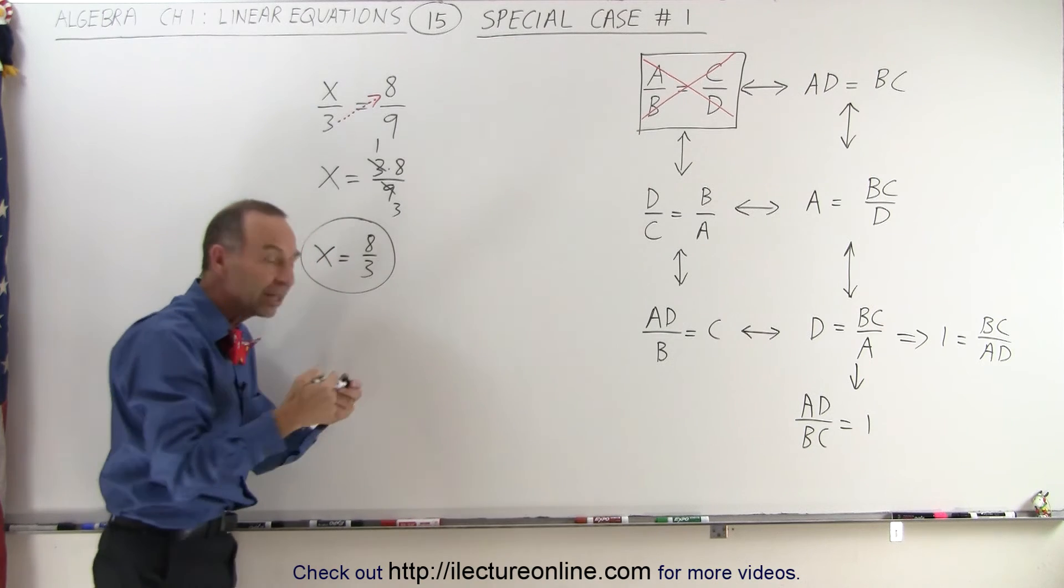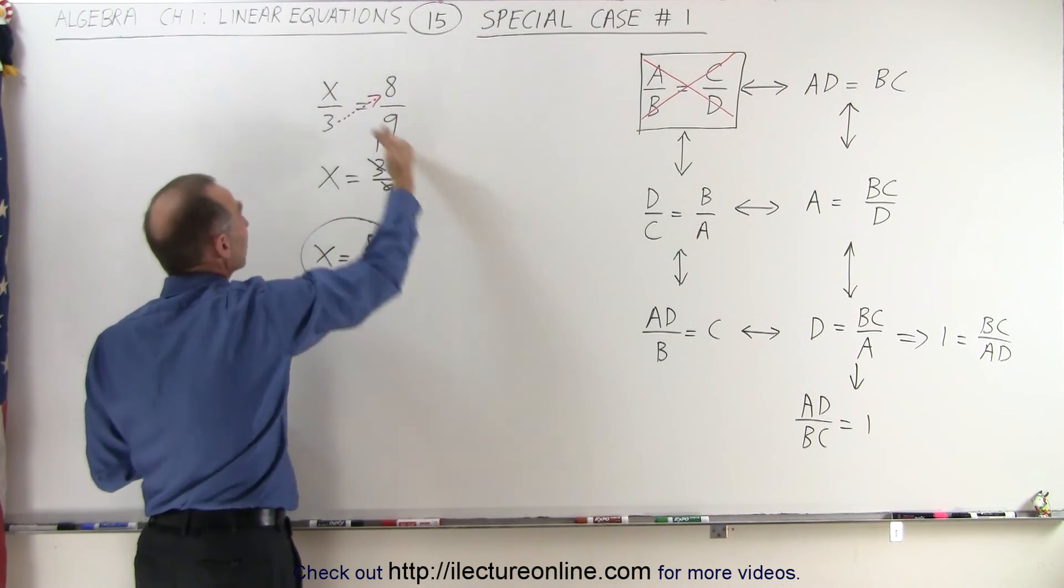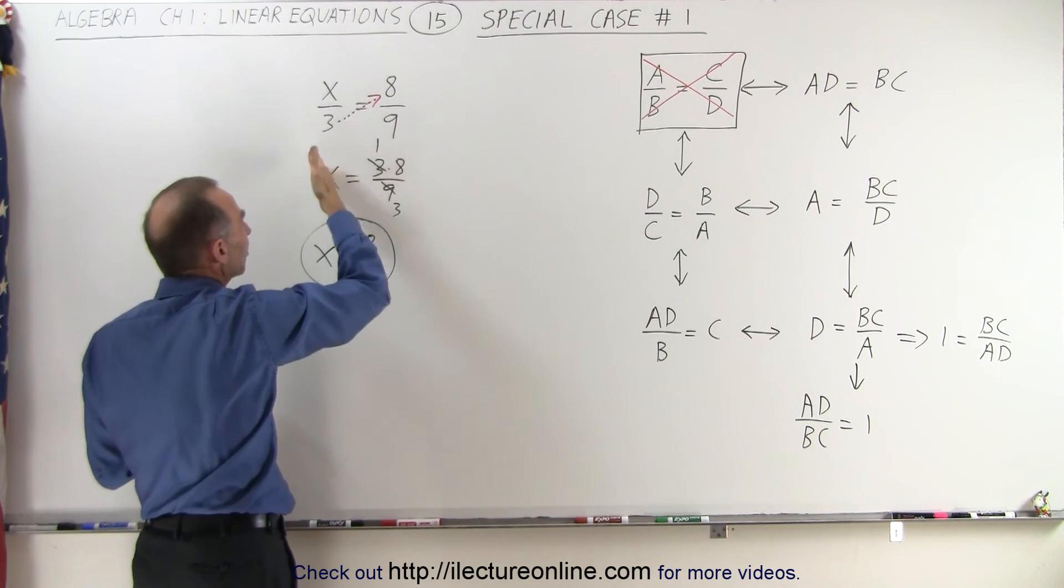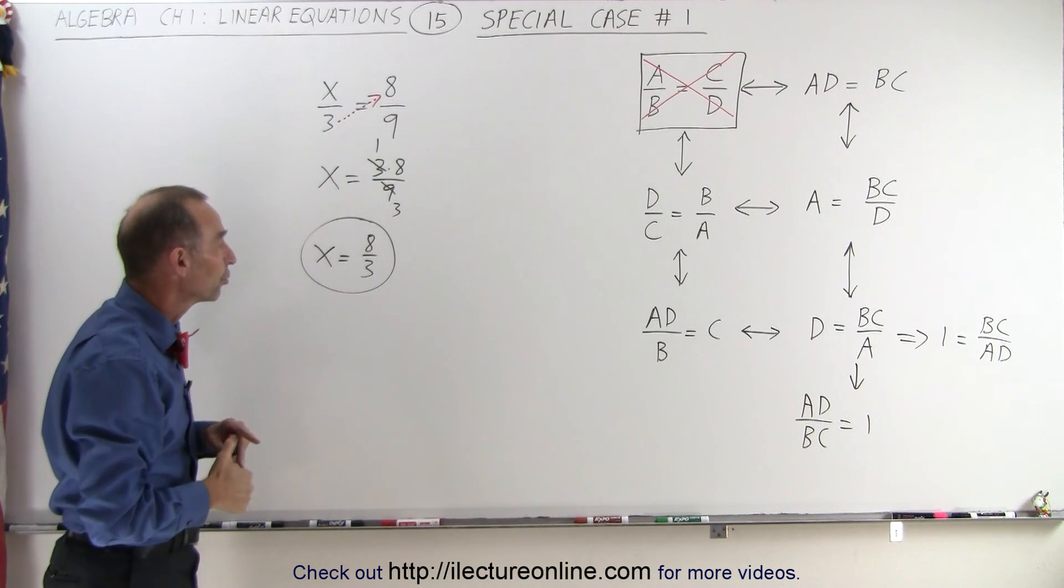So, I can use this simple technique, where when I have two fractions that are equal to each other, I can move things along the diagonal the way I need to, in order to isolate the X, and I can simplify and get the solution very quickly by using this approach.